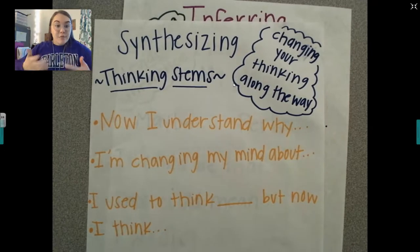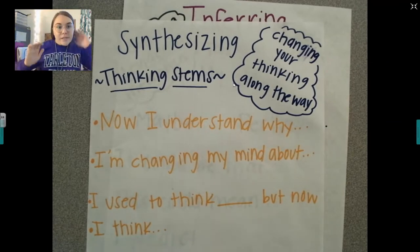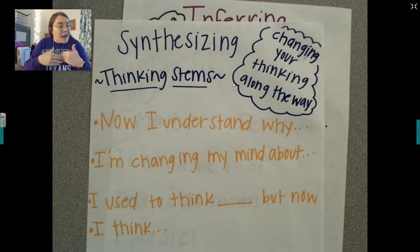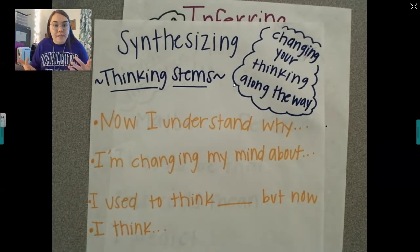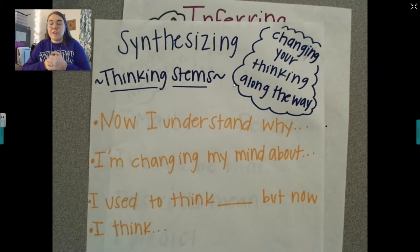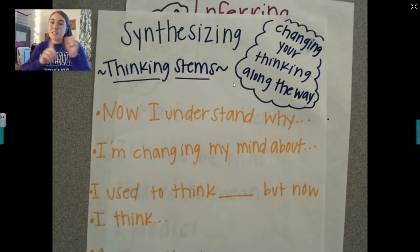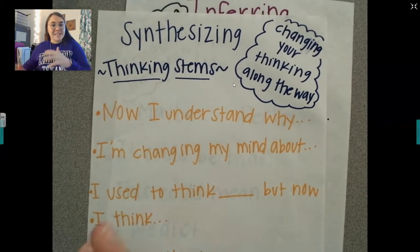When I infer, I'm making predictions. When I'm synthesizing, I'm changing my thinking along the way. I would pause and make a prediction — I'd say, oh my gosh, Gregor is going to go on his quest. Then as I read, I'd say Gregor did go on his quest but he's scared. My inference was that Gregor is going to be super confident, but I'm going to change my thinking — I'm changing my mind about Gregor being confident because he seems like he's getting scared. That would be synthesizing.